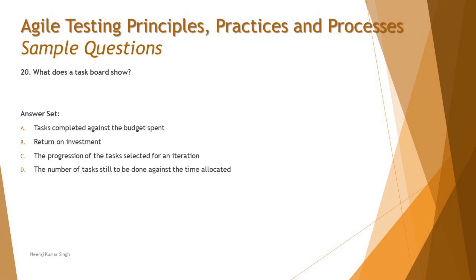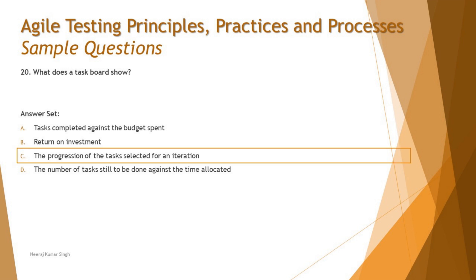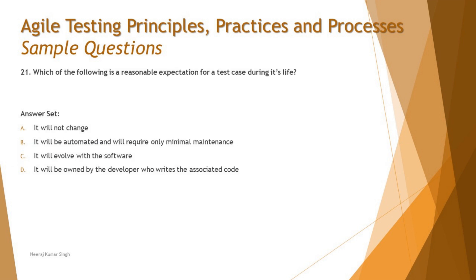We are very clear on what the task board is about. The right answer is C — the progression of the tasks selected for an iteration is what gets represented by the task board, with its several columns and various statuses.